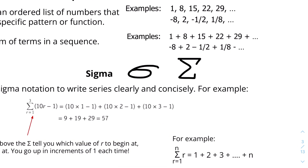The numbers below and above the sigma symbol tell you which value of r to begin at and which value to end at, and you go up in increments of 1 each time. So for the sum of r from r equals 1 to n, that's basically equal to 1 + 2 + 3 + … + n, going up by 1 each time.